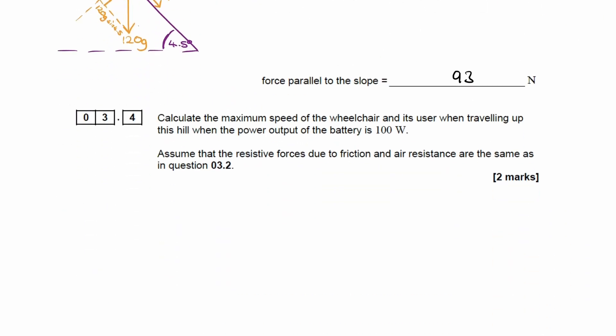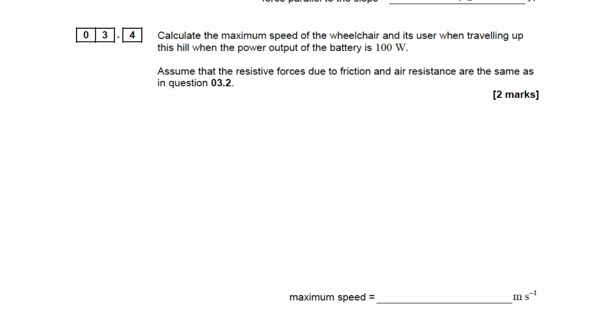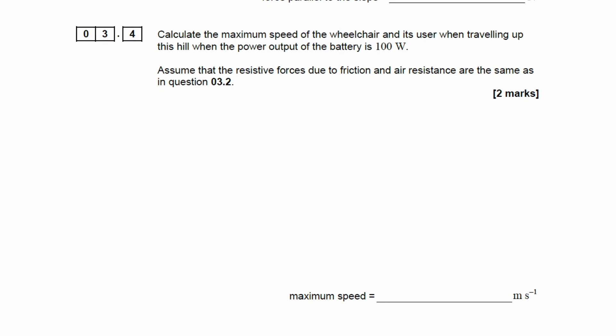We're trying to work out the maximum speed. We have the power output of the battery. We can use the equation power equals force times velocity. We have P equals 100, we're trying to work out V, and F would be the driving force.